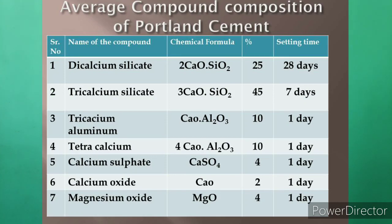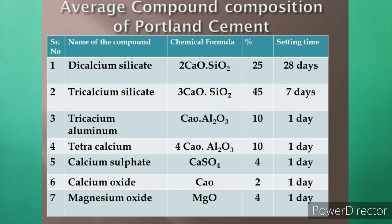Portland cement contains seven compounds: dicalcium silicate, tricalcium silicate, tricalcium aluminate, tetracalcium aluminoferrite, calcium sulfate, calcium oxide, and magnesium oxide. The setting times are: dicalcium silicate — 28 days, tricalcium silicate — 7 days, tricalcium aluminate — 1 day, and tetracalcium aluminoferrite — 1 day.